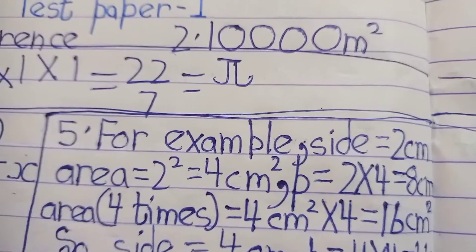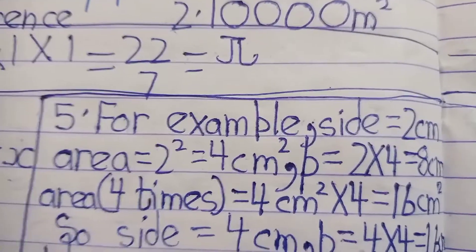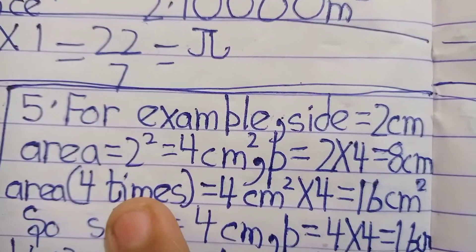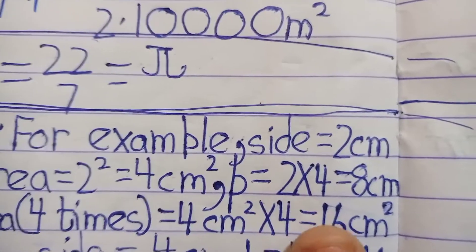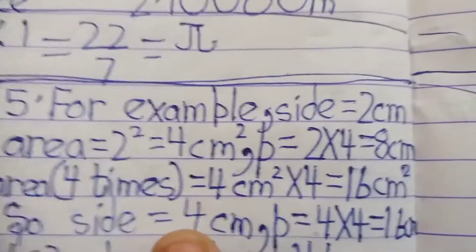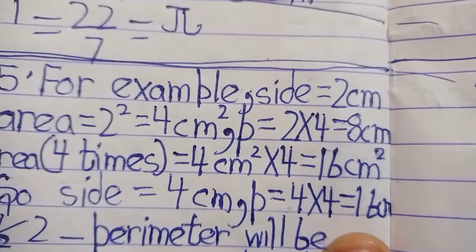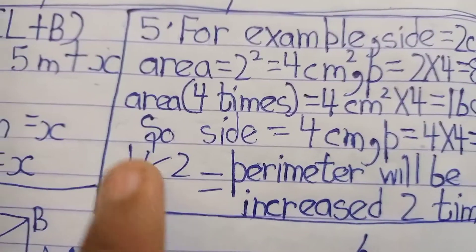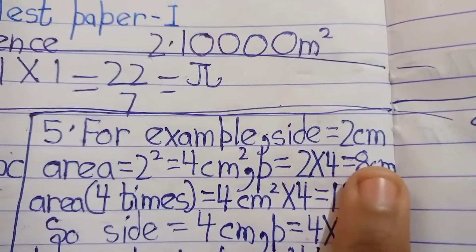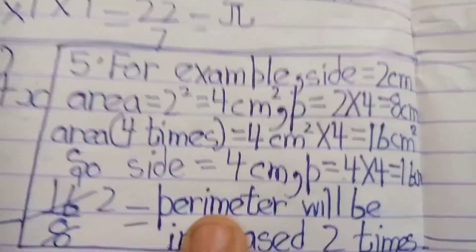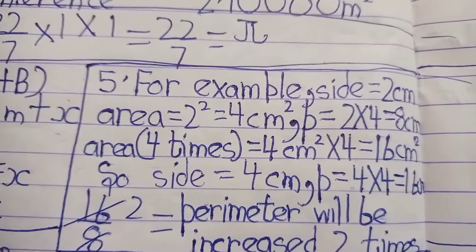We take an example: side is 2 cm, area is 2 squared which is 4 cm square, and perimeter is 2 multiplied by 4 which is 8 cm. If the area is increased 4 times, new area is 16 cm square, so the new side is 4 cm, and the new perimeter is 4 multiplied by 4 which is 16 cm. So the perimeter increases by 16 over 8, which means it doubles.